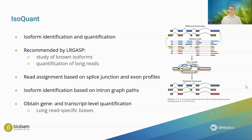When speaking about quantification with long reads, we must be aware that long reads exhibit some specific biases. For instance, there is a bias towards shorter transcripts, meaning that shorter transcripts may falsely appear to have higher expression levels than longer transcripts. BioBam is contributing to exciting research with collaborators to look further into these long-read specific biases. For now, we will work with the quantification we get from IsoQuant.